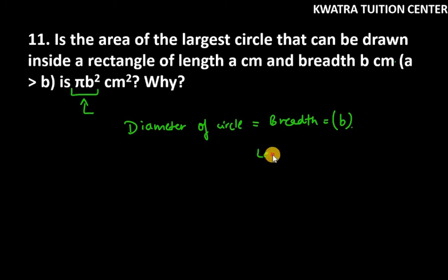Length we know is a centimeter. Now, if you want the area of the circle, we require radius. But the radius will be equal to b over 2.